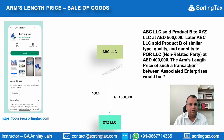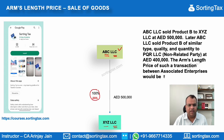In this particular example, there is a company ABC LLC and it owns 100% of XYZ LLC. Due to 100% ownership, ABC LLC and XYZ LLC are both related parties.